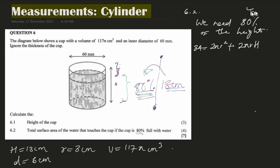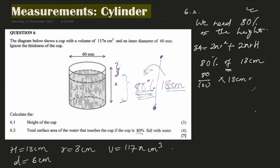First, let's find 80 percent of the height. We need 80 percent of 13 centimeters, which is (80/100) × 13 = 10.4 centimeters. Let me verify on the calculator: 13 × 80/100 = 10.4. So the height I'm working with is 10.4 centimeters.